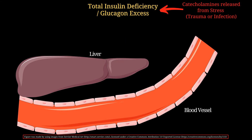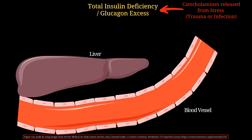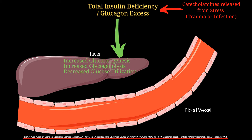Type 1 diabetes patients cannot produce any insulin, resulting in total insulin deficiency. This tips the insulin-to-glucagon ratio and favors glucagon's function. At times of stress — due to trauma or infection — catecholamine production is stimulated, which upregulates glucagon production and exacerbates this pathway. Glucagon then acts on the liver to increase gluconeogenesis, increase glycogenolysis, and decrease glucose utilization.